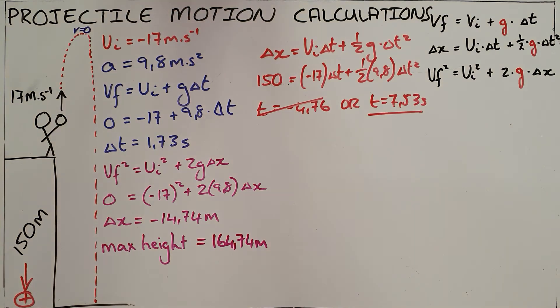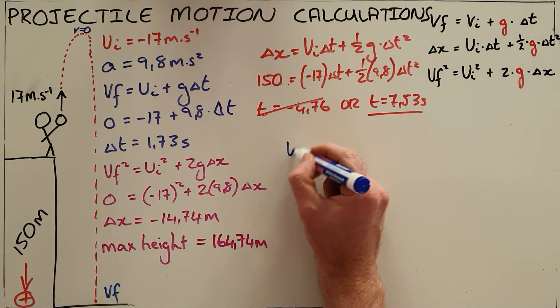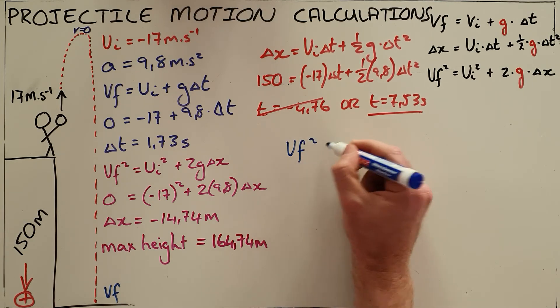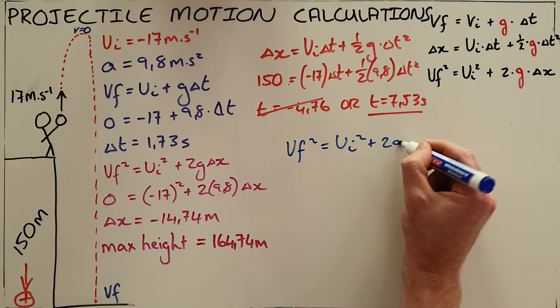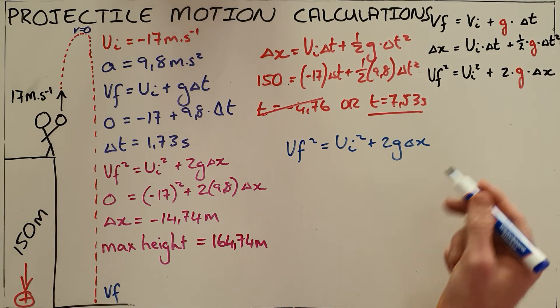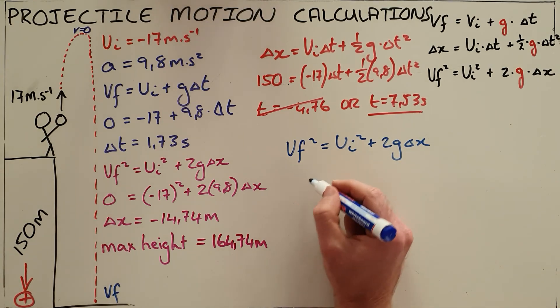The final common calculation or question would be asking what is the final velocity when it hits the ground, and we would calculate that in the following way: final velocity squared is equal to initial velocity squared plus 2 times gravitational acceleration times the displacement. Final velocity is our unknown.